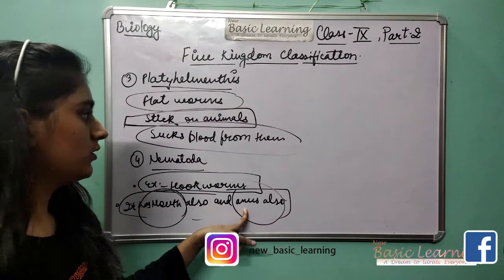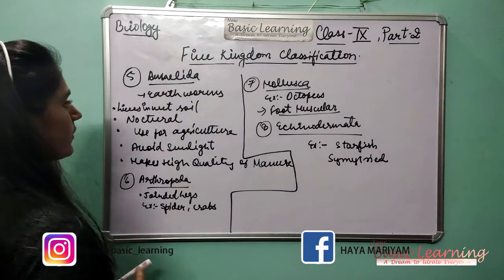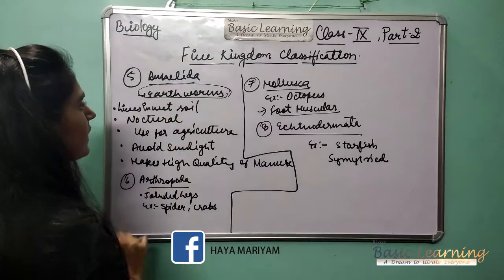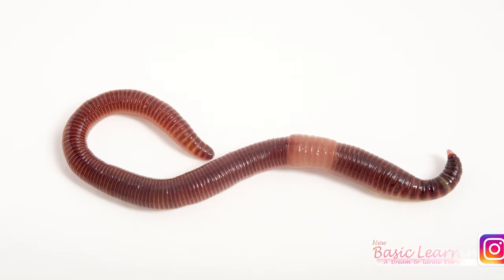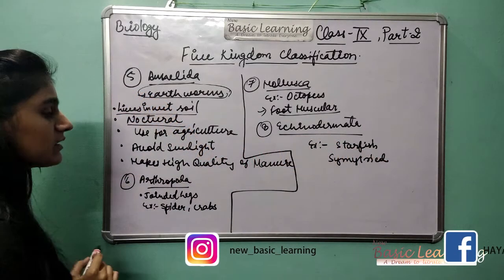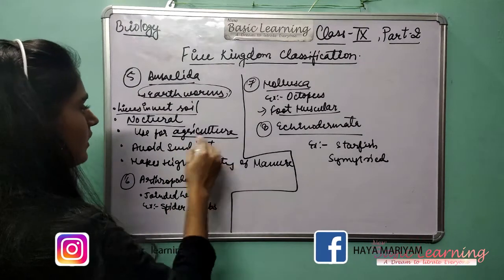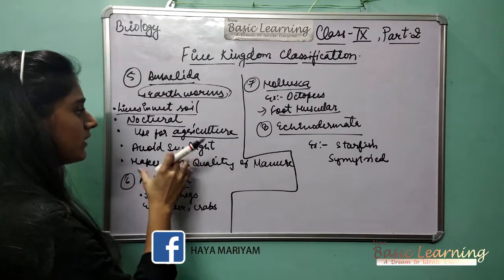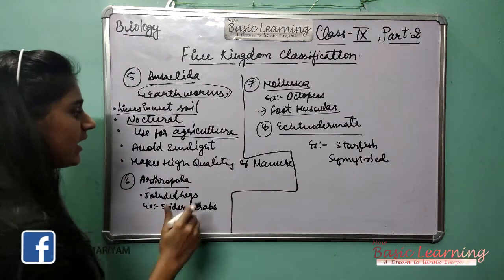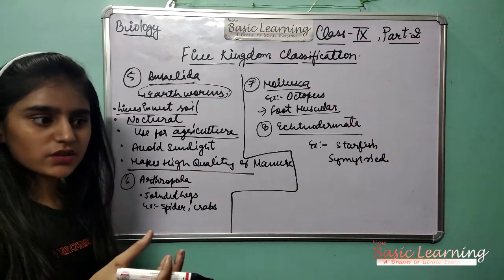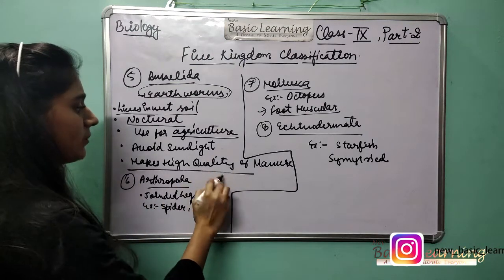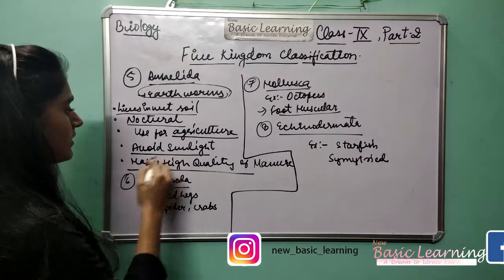The fifth phylum is Annelida. Earthworms come under this category. They mostly live in wet soil. They are nocturnal — active at night and they avoid sunlight. They are very useful in agriculture because their waste material mixes in the soil and makes high-quality manure.